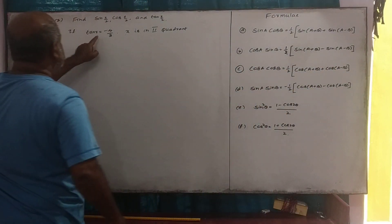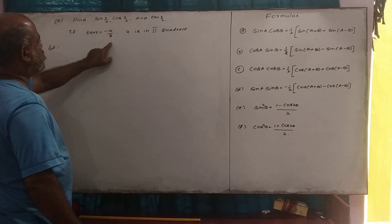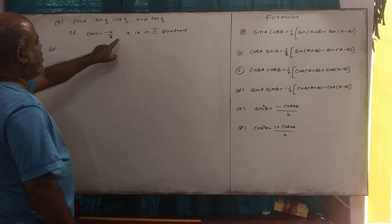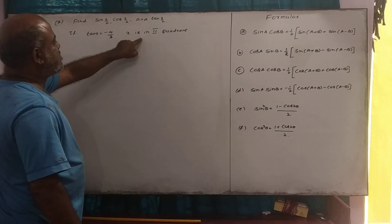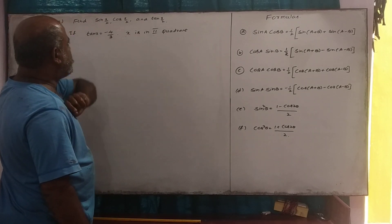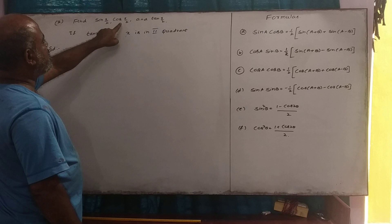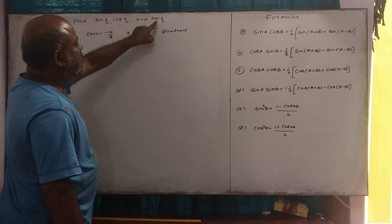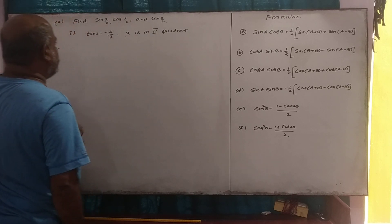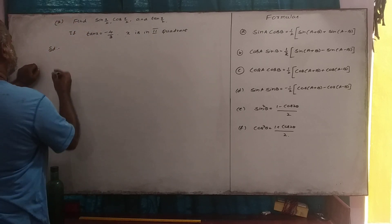Here, tan x is equal to minus 4 by 3, and x is in the second quadrant. We need to find sin x by 2, cos x by 2, and tan x by 2.